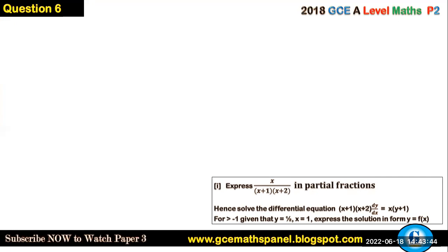Let's answer this question: Express x over (x+1)(x+2) in partial fractions. This is a simple case, so x/[(x+1)(x+2)] is identical to A/(x+1) plus B/(x+2). From here we multiply all through by the denominator.